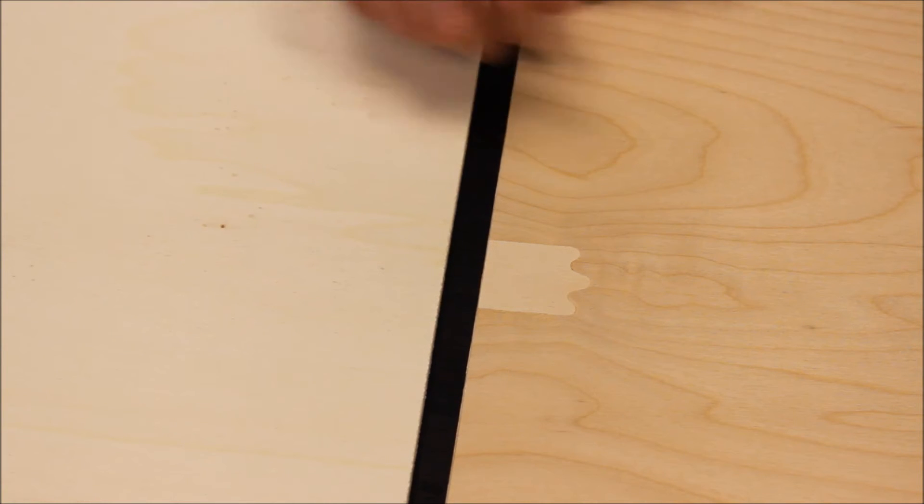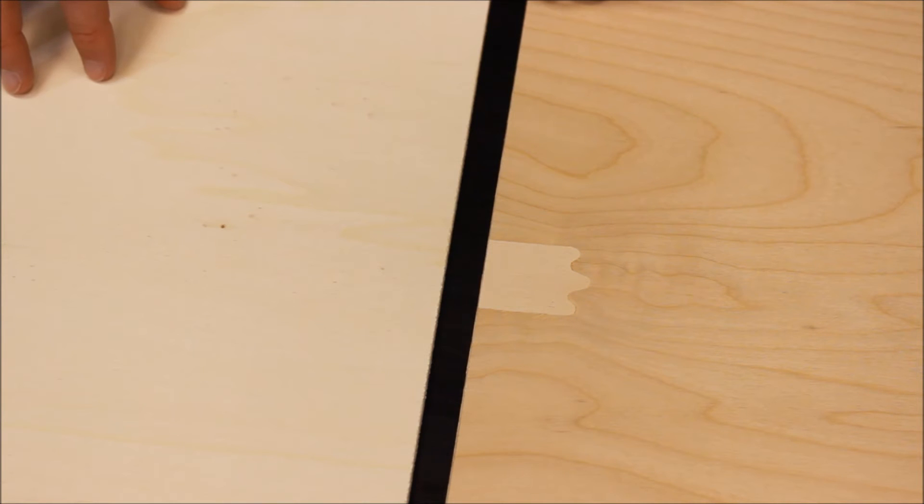Okay, so here we have two pieces of plywood. This is a birch plywood and this is a poplar plywood.